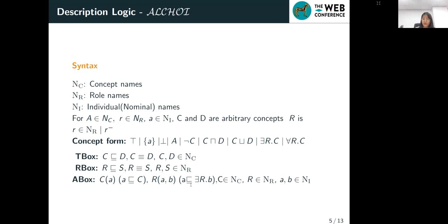R of AB means that there exists a role R between A and B.